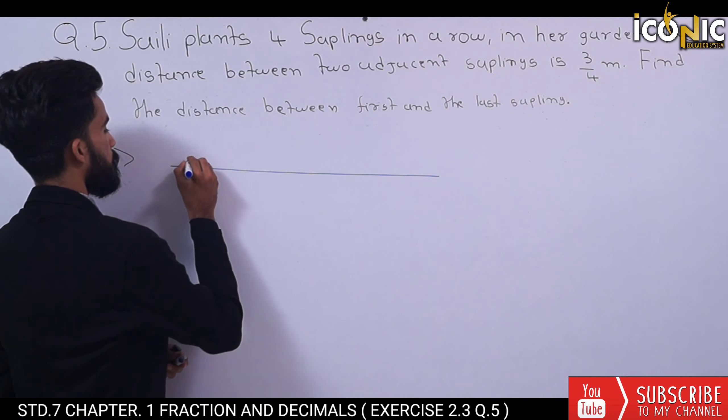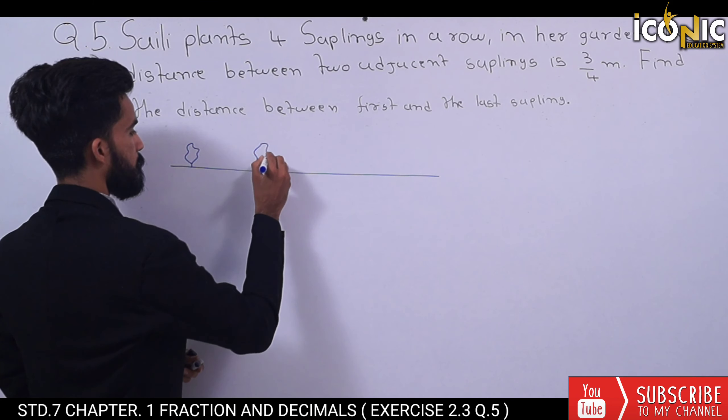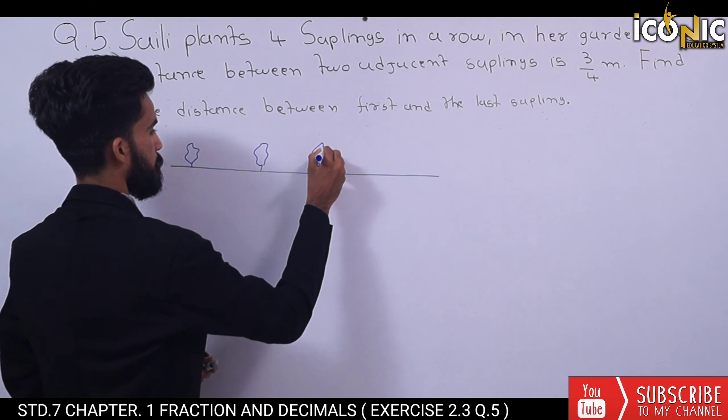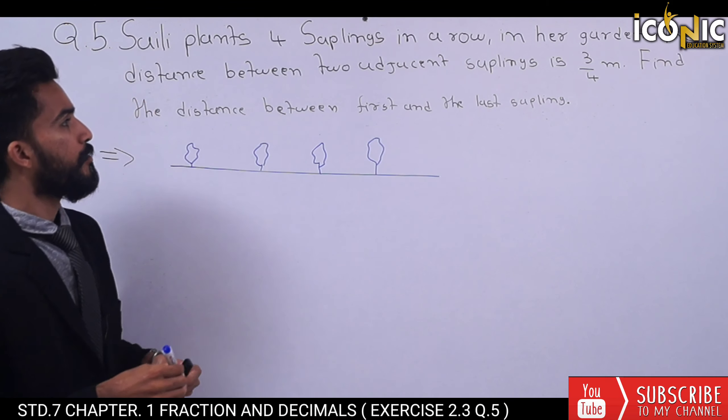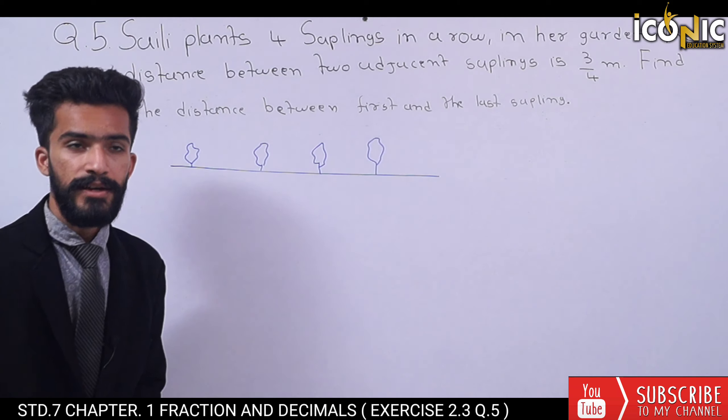This is our first sapling, second sapling, third sapling, and fourth sapling. Four saplings. We have to find the